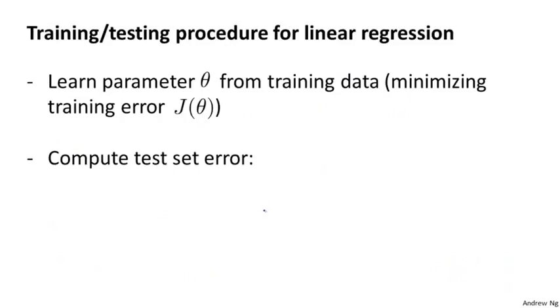Here then is a fairly typical procedure for how you would train and test a learning algorithm, maybe linear regression. First, you learn the parameters theta from the training set. So you minimize the usual training error objective j of theta, where j of theta here was defined using that 70% of all the data you have, only the training data.